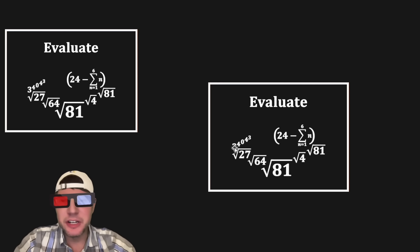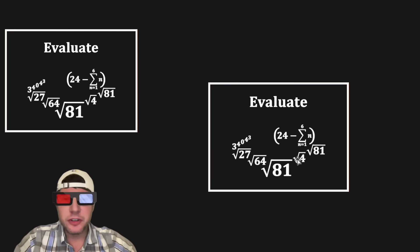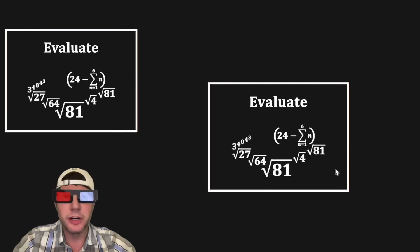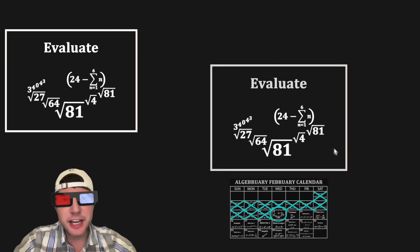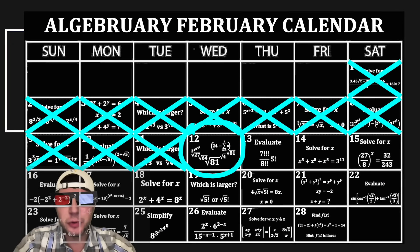Hey guys, this looks like a fun one. It's 3 to the 4 to the 0 to the 4 to the 3rd root of 27th root of 64th root of 81 to the power of the square root of 4 to the power of 24 minus the sum from n equals 1 to 6 of the nth root of 81. This is day 12 of our algebraic calendar. For the month of February, we're gonna solve 28 algebraic problems. There are some pretty cool looking ones here.